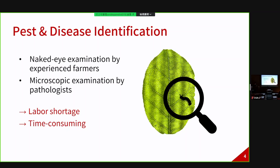Conventionally, identification has relied on examination by experienced farmers or microscopic examination by plant pathologists. However, as of 2022, the tomato industry in Taiwan is facing labor shortage, and manual examination is time consuming. Therefore, an automatic tool for identification is in demand.